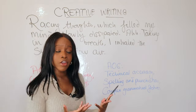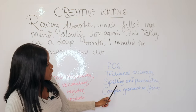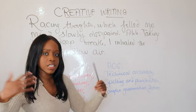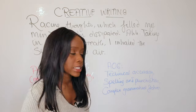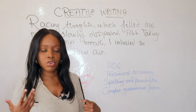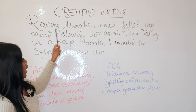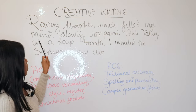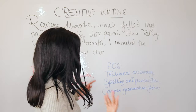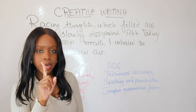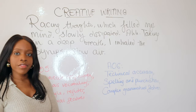For AO6, I also need to demonstrate technical accuracy — no spelling errors and correct punctuation. That covers your SPAG marks. You also need to show complex grammatical features, such as long and short sentences, listing, and semicolons. For example, 'racing thoughts, which filled my mind,' uses parenthesis — brackets replaced by a comma on either side — which is a complex grammatical feature. I've also used a one-word minor sentence, which is another complex grammatical feature, before finishing with a nice complex sentence.